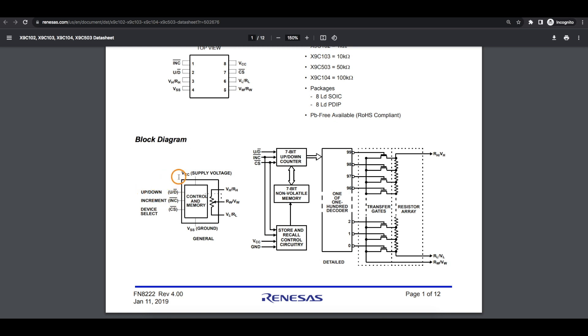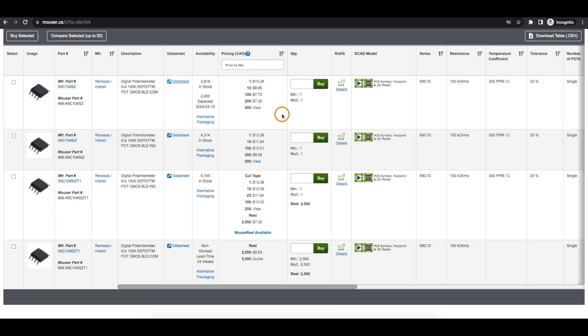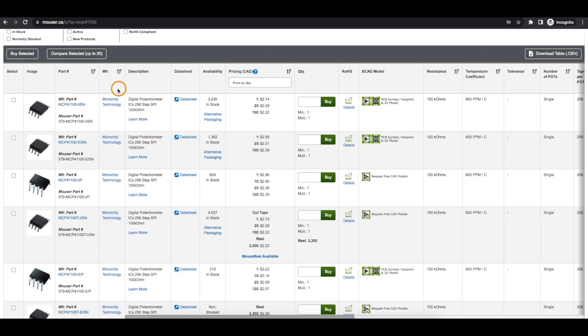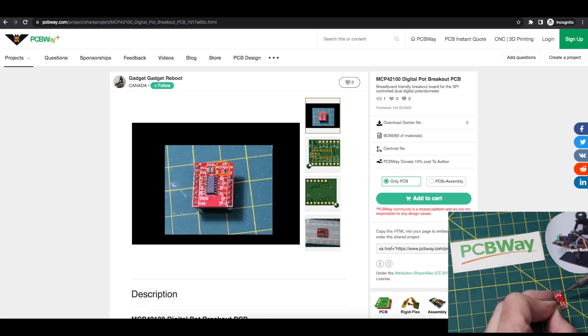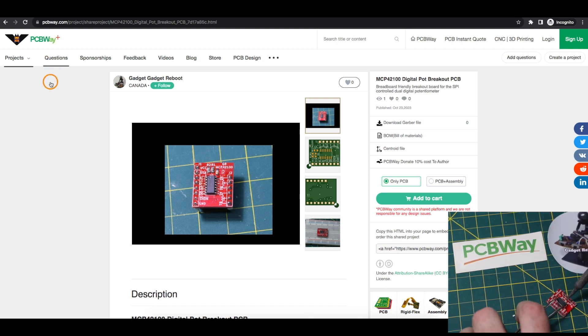But aside from that, these parts are looking kind of expensive, over $10 for just quantity one of a single potentiometer. While the Microchip MCP41 series is only a couple of dollars for quantity one. So I made this breadboard compatible breakout board for the MCP42 series with today's sponsor, PCBWay.